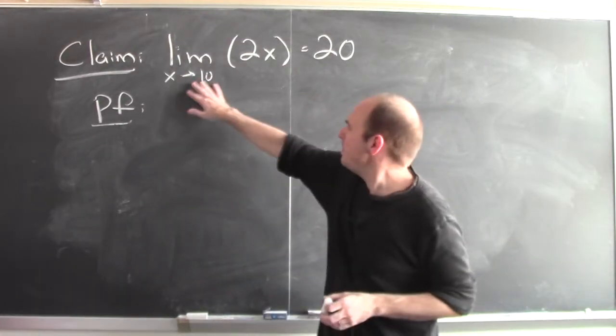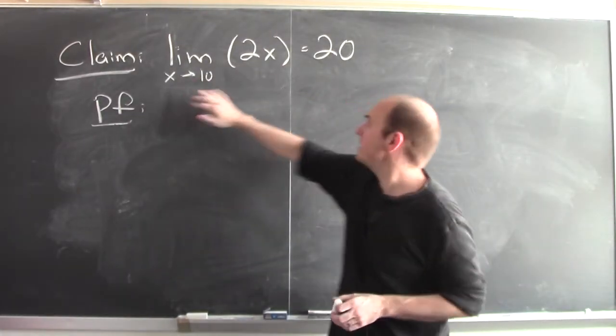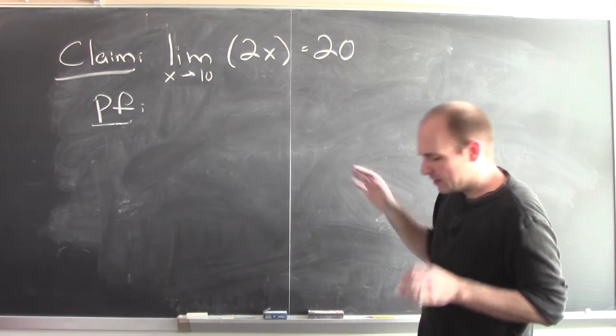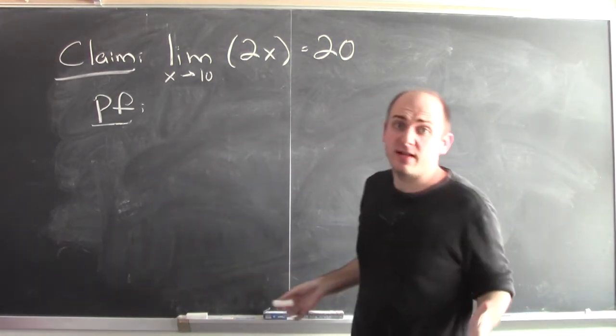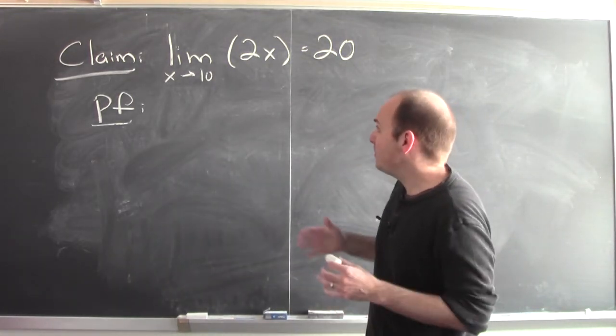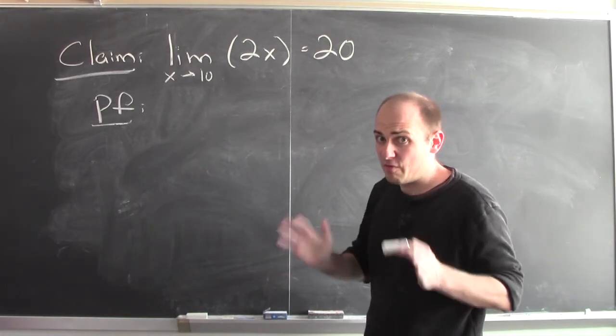Here's a claim. The limit of 2x as x approaches 10 is 20. And to justify this claim using an epsilon-delta argument, I have to be able to produce a delta for every epsilon.